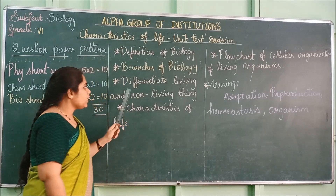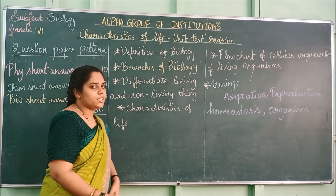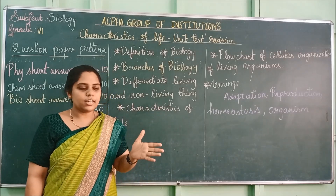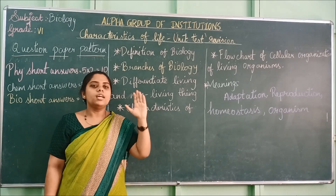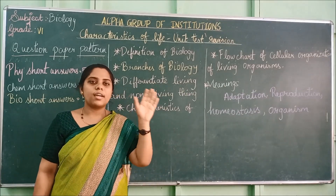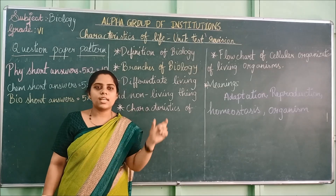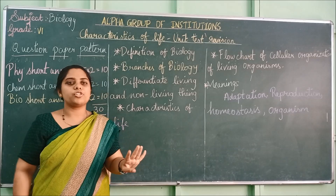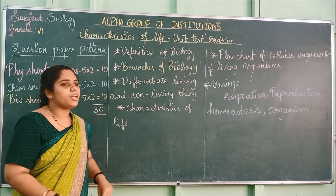Next is: differentiate between living things and non-living things. You should know what a living thing and a non-living thing are. On page 3 you will have a definition. When the question is asked, you have to put a box, write 'living things' and 'non-living things,' and write the definition on both sides with an example. So 4 points should be there in the differentiation.